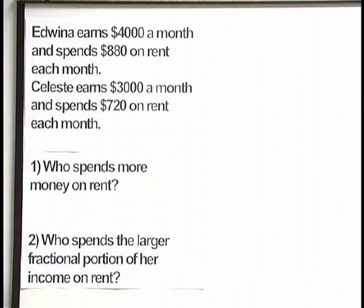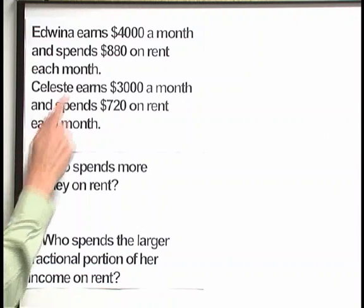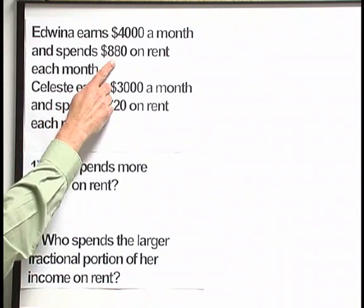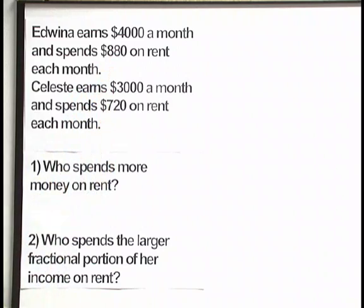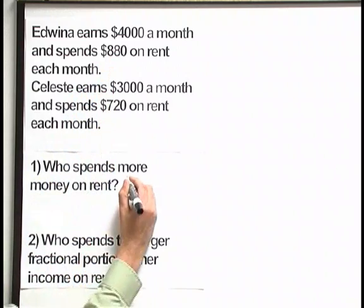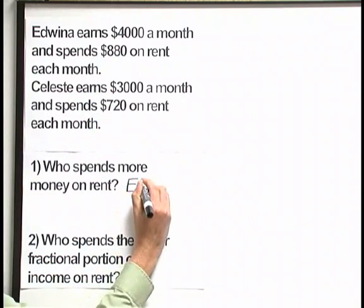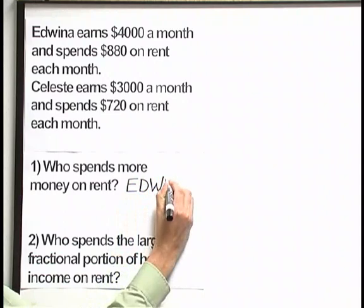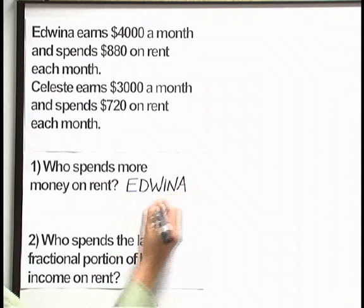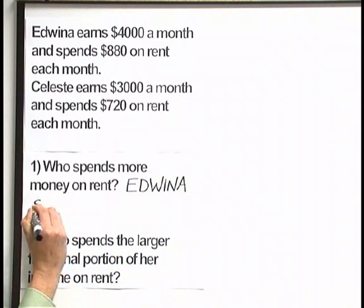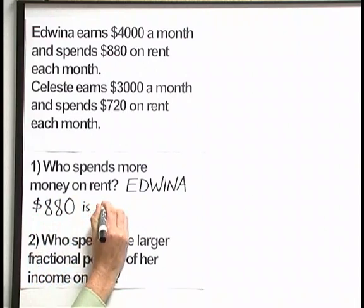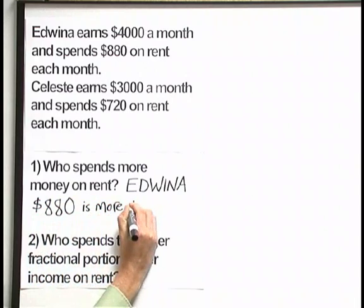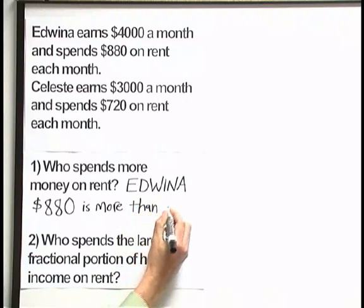The first question is easy to answer because we have the numbers right in front of us. We know that Edwina spends $880 on rent and Celeste spends $720 on rent. So who spends more money on rent? That's Edwina, because $880 is more than $720.